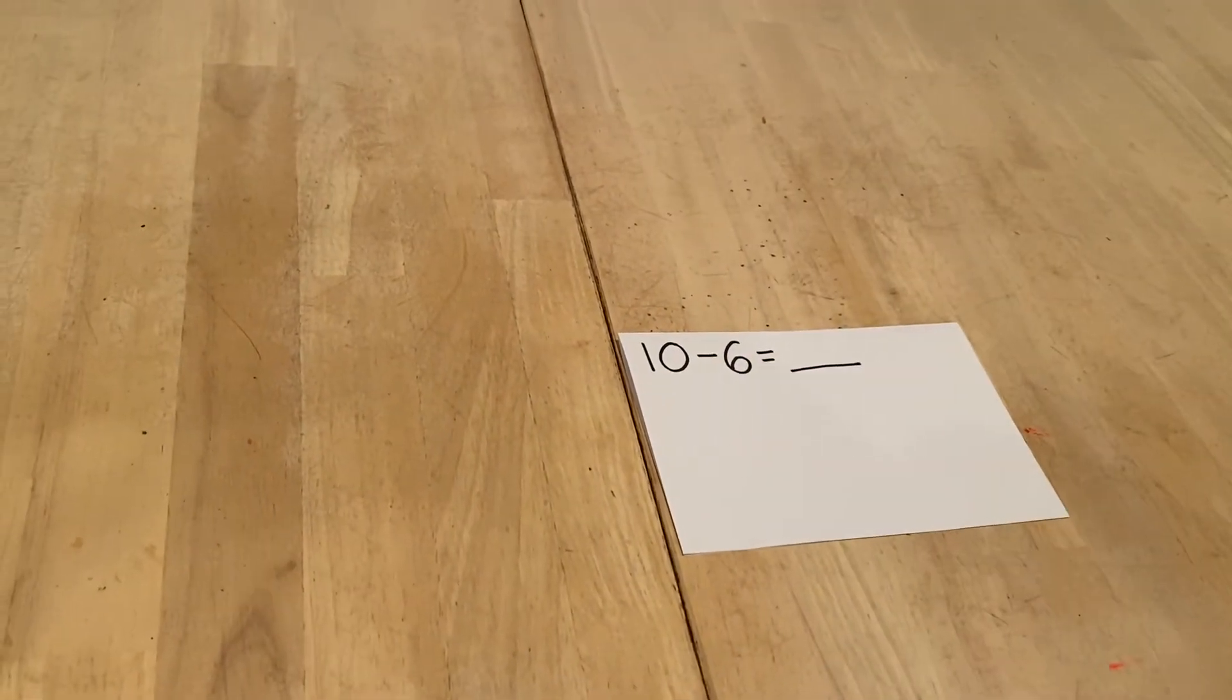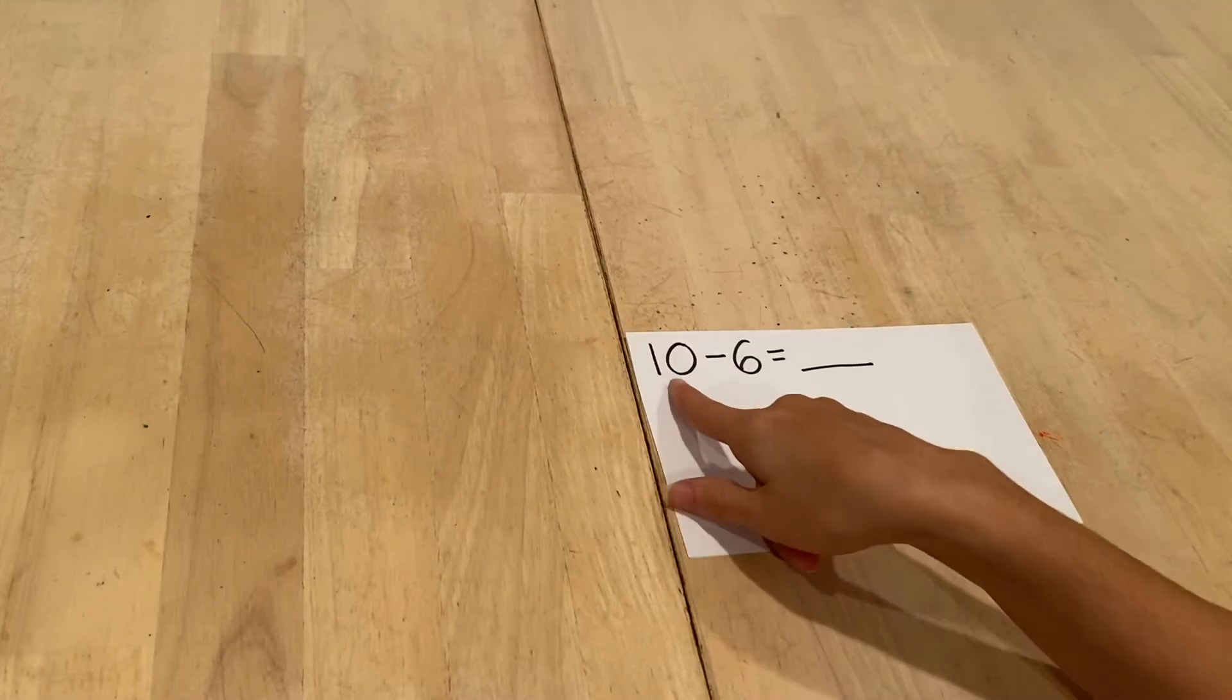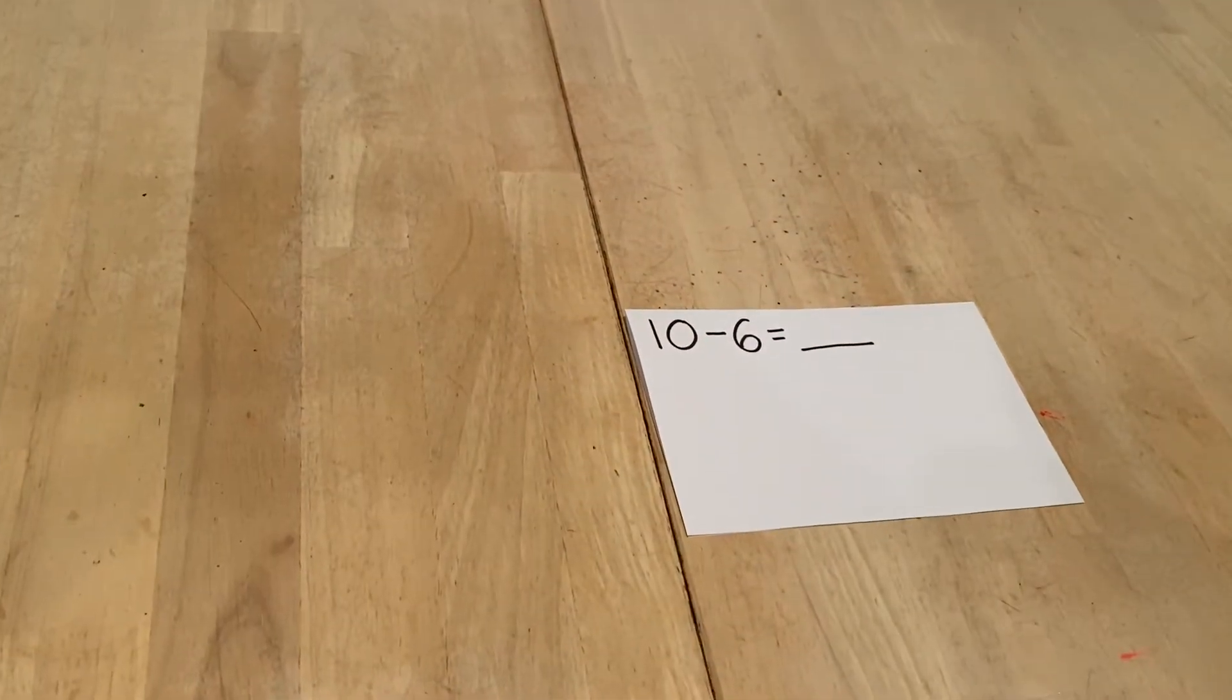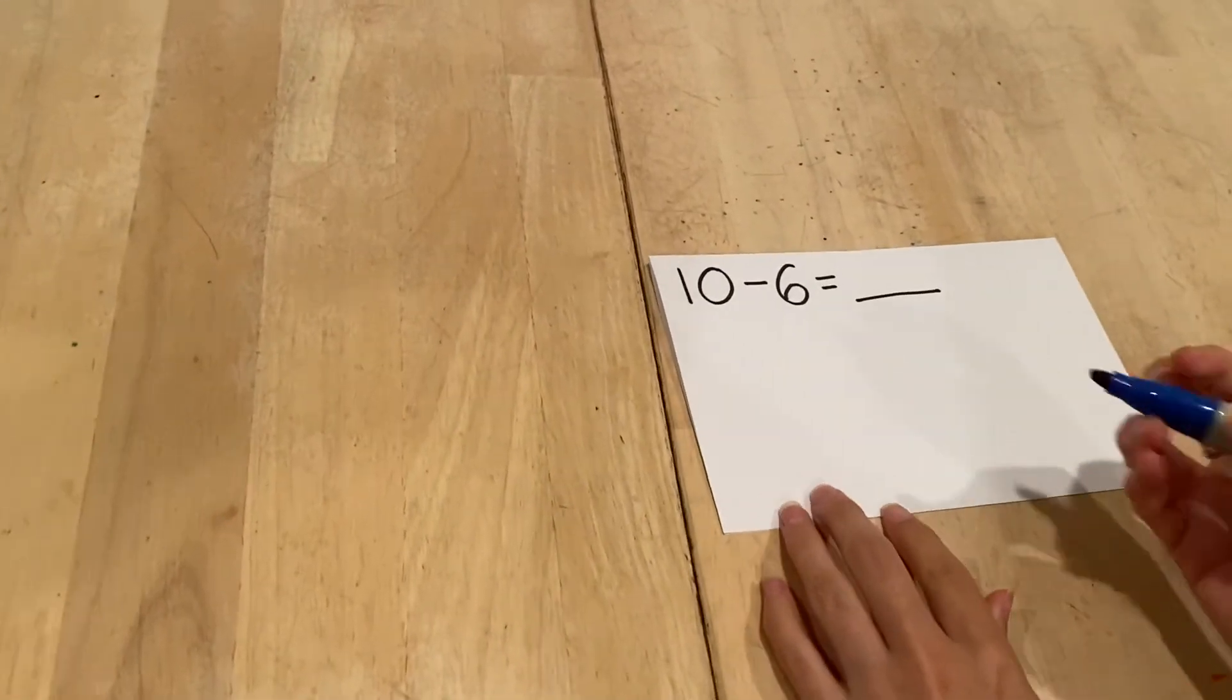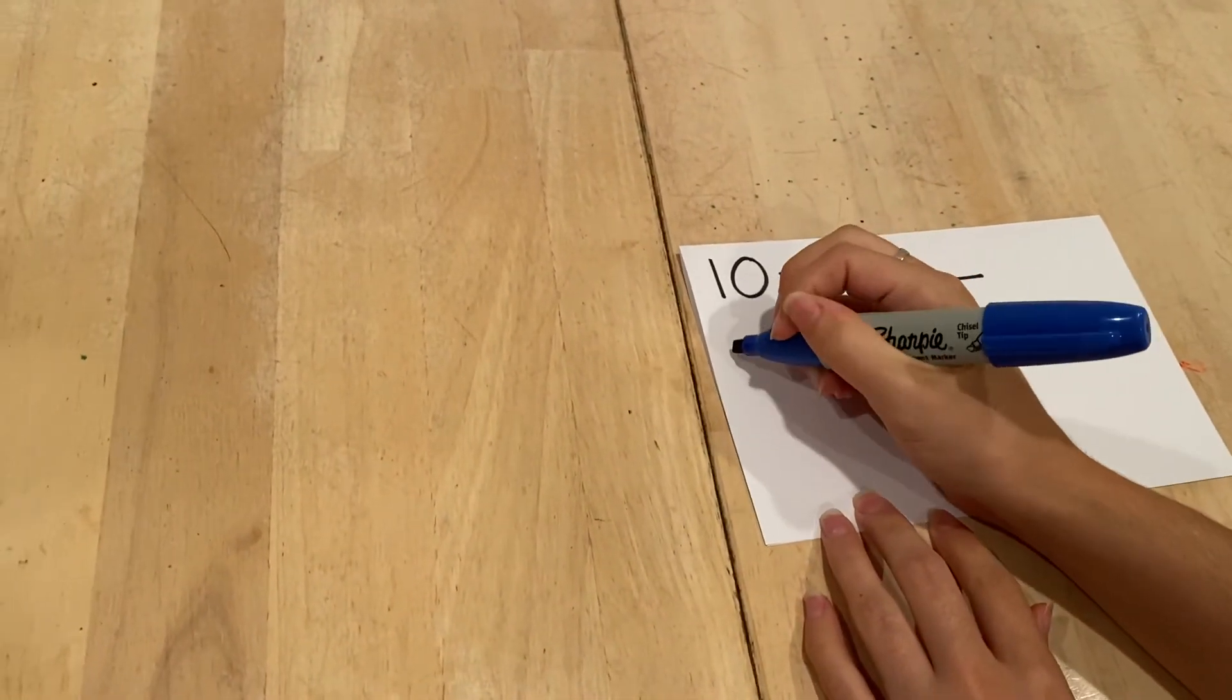When we do our picture, we always start with the big number. So I'm going to draw the big number. Remember, our drawing should be quick and simple, so I'm going to use circles. So I'll start with 10 circles.